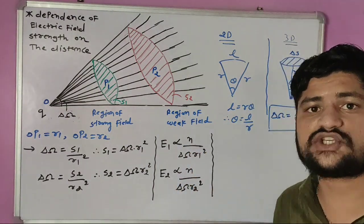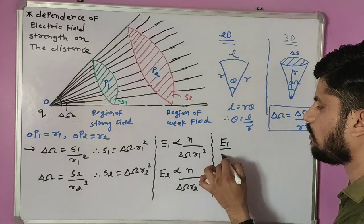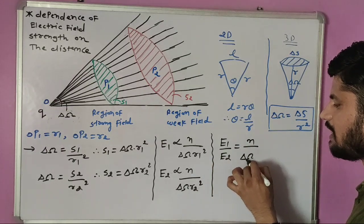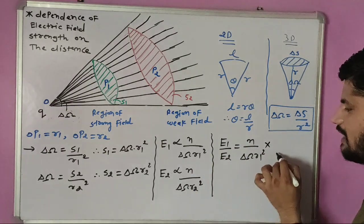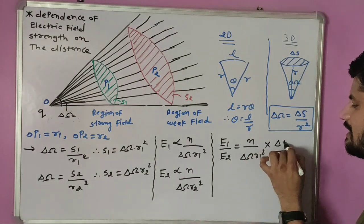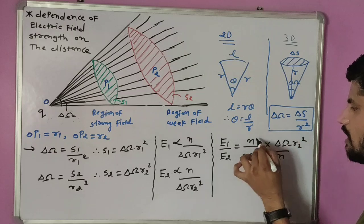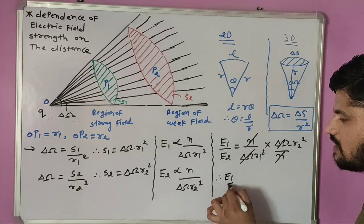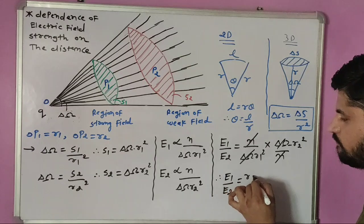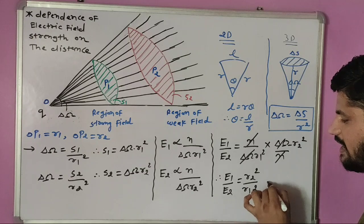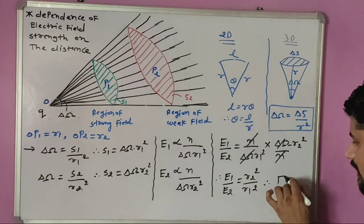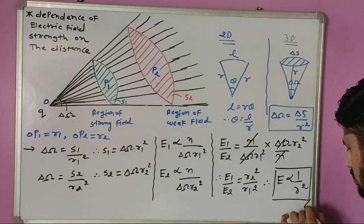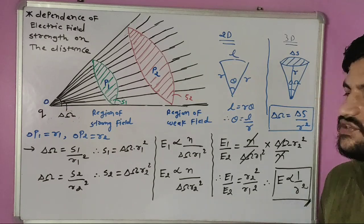Now I will write the ratio E1 upon E2. In place of E1 write N upon delta omega R1 squared, and in place of E2 write N upon delta omega R2 squared. Now N cancels out, delta omega cancels out, giving E1 upon E2 equals R2 squared upon R1 squared. So friends, we can say that the electric field is inversely proportional to the square of the distance. Please write this complete derivation in your notebook. Thank you.